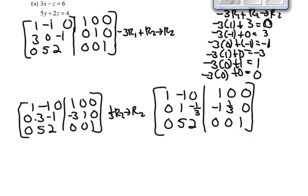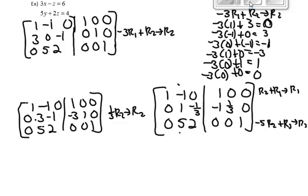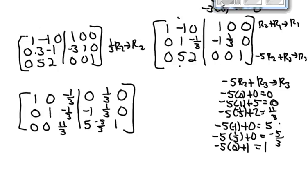This 3 needs to be a 1, so I'm going to multiply the second row by 1/3. Doing that work, we get the new row 2. Now this negative 1 needs to be a 0 and this 5 needs to be a 0. I'll take R2 plus R1 as my new row 1, and negative 5R2 plus R3 as my new row 3. Doing the row operations, we get our new matrix. The first two columns are done. Now I need this 11/3 to be a 1, so I'll multiply the entire third row by 3/11, because 11/3 times 3/11 gives me 1.